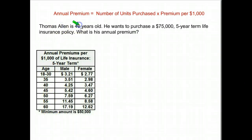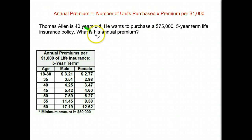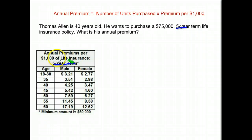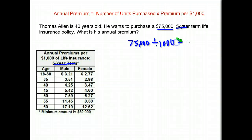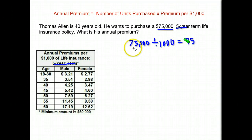All we had to do was take the amount of coverage, divide it by a thousand, and multiply by the premium rate they gave us. This time we have a chart. Thomas Allen is forty years old and he wants to purchase seventy-five thousand dollars of five-year term life insurance. What is his annual premium? I told you the five-year term would come into play somewhere — here's where it comes into play, through the chart they use to determine how much he pays. So we take seventy-five thousand dollars divided by a thousand: he is purchasing seventy-five units of insurance.